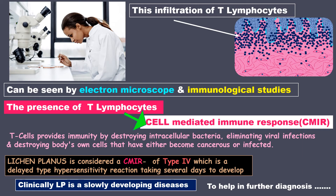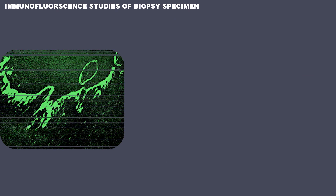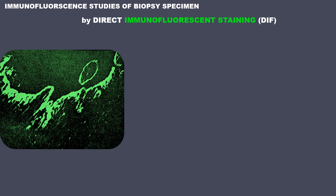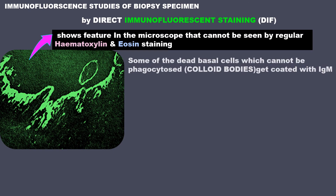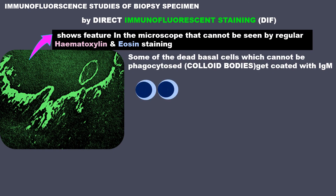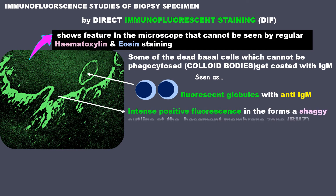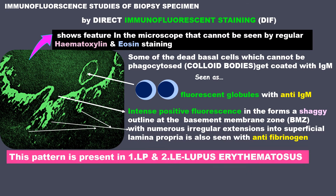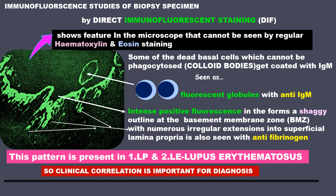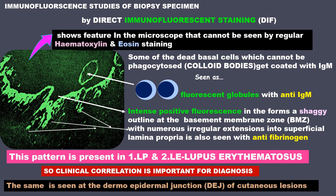To help in further diagnosis, immunofluorescent studies of biopsy specimens are done by direct immunofluorescent staining. It shows features in the microscope that cannot be seen by regular H&E staining. Some dead basal cells that cannot be phagocytosed get coated with IgM and are seen as fluorescent globules with anti-IgM. Intense positive fluorescence in the form of a shaggy outline at the basement membrane zone, with numerous irregular extensions into the superficial lamina propria, is also seen with anti-fibrinogen. This pattern is present in lichen planus and also in lupus erythematosus, so clinical correlation is important for diagnosis. The same is seen at the dermo-epidermal junction of cutaneous lesions.